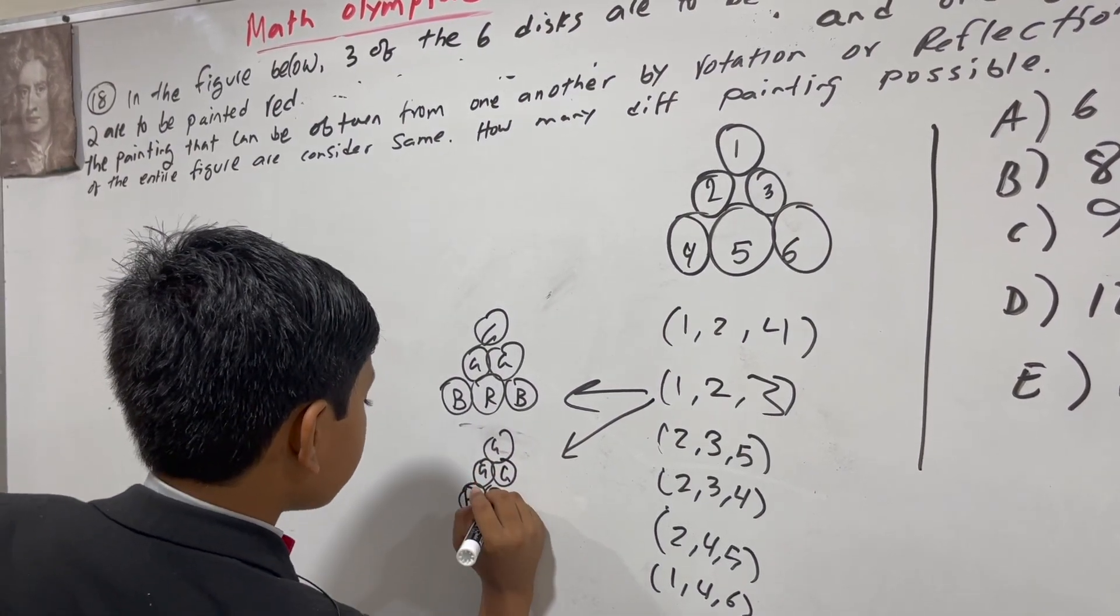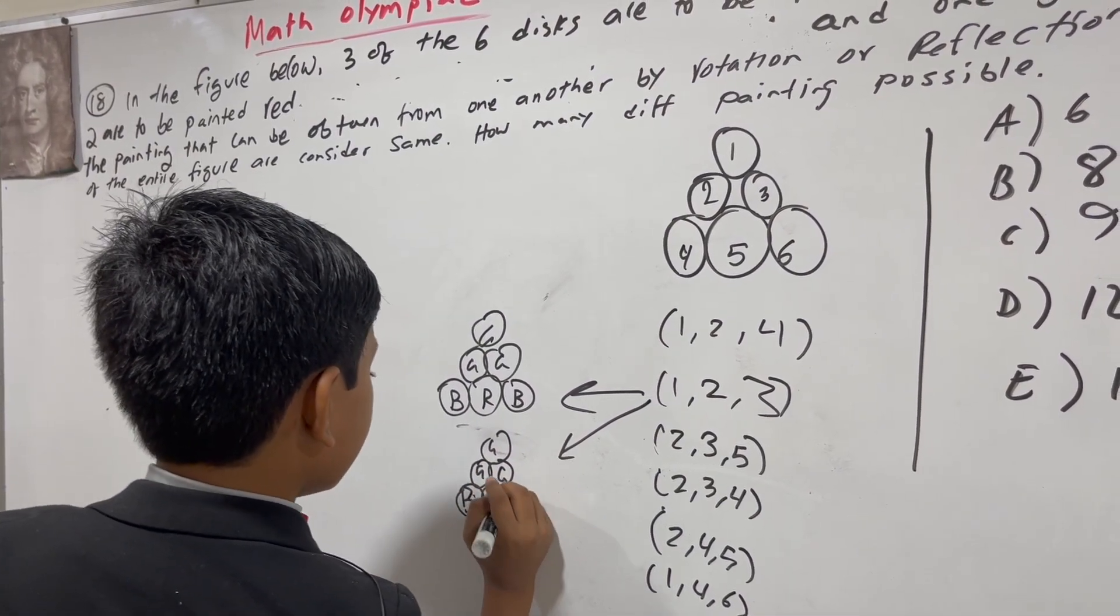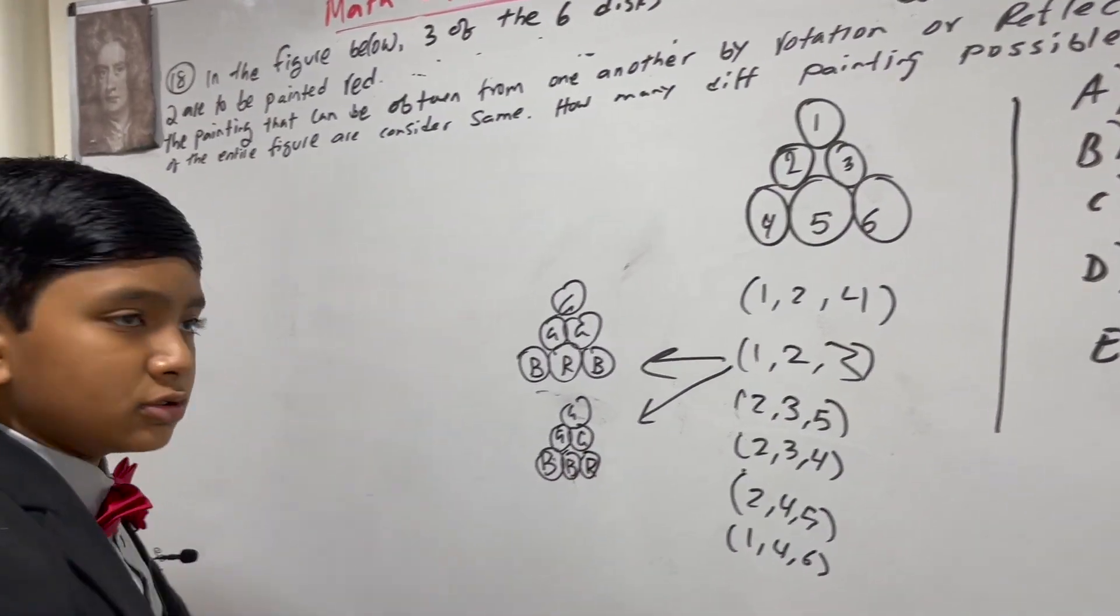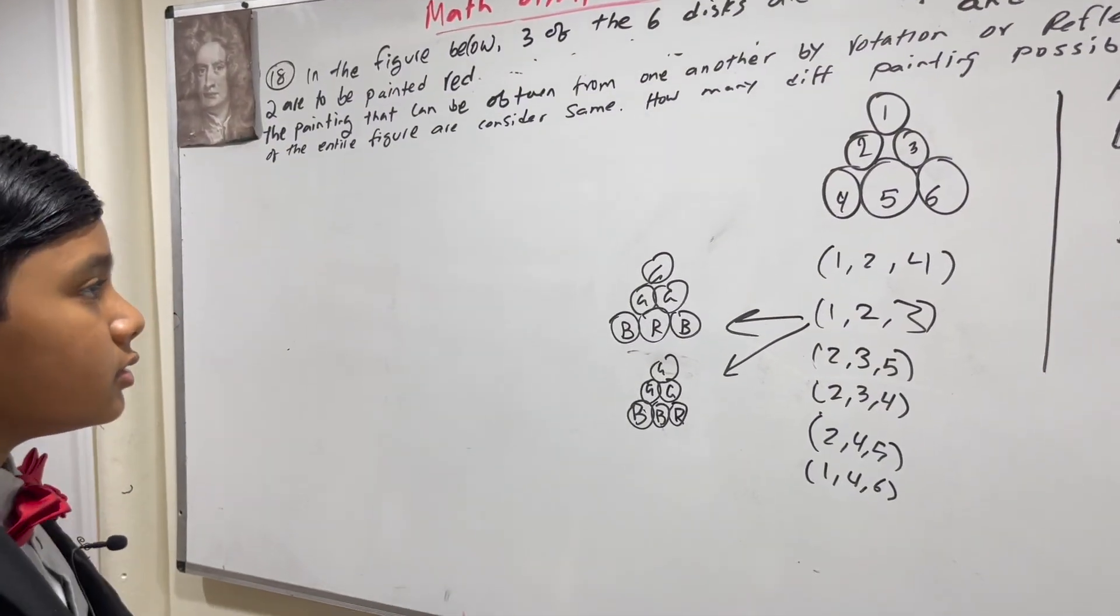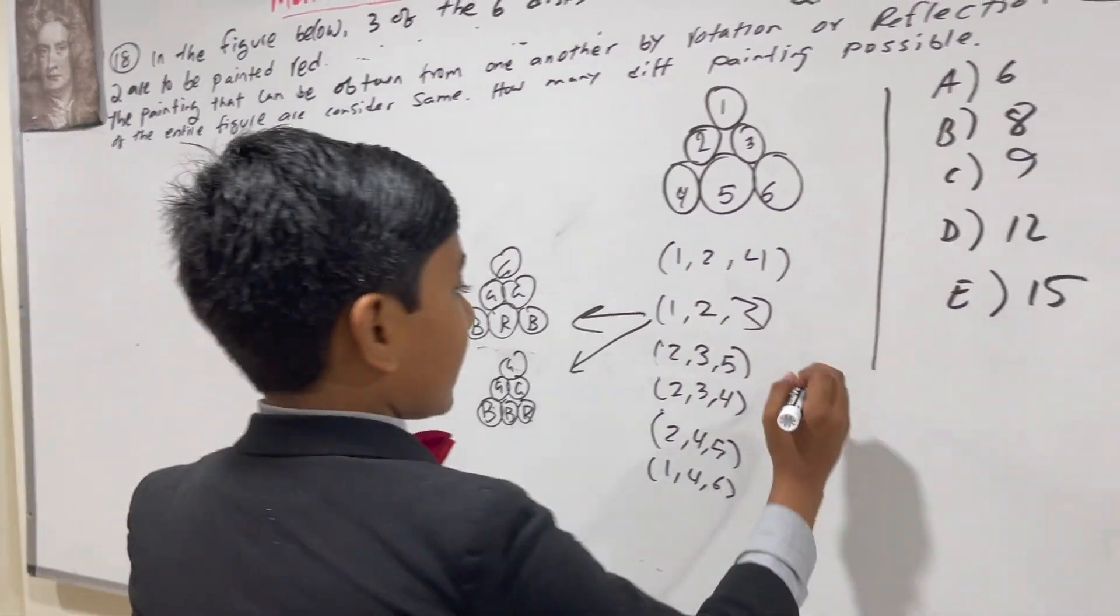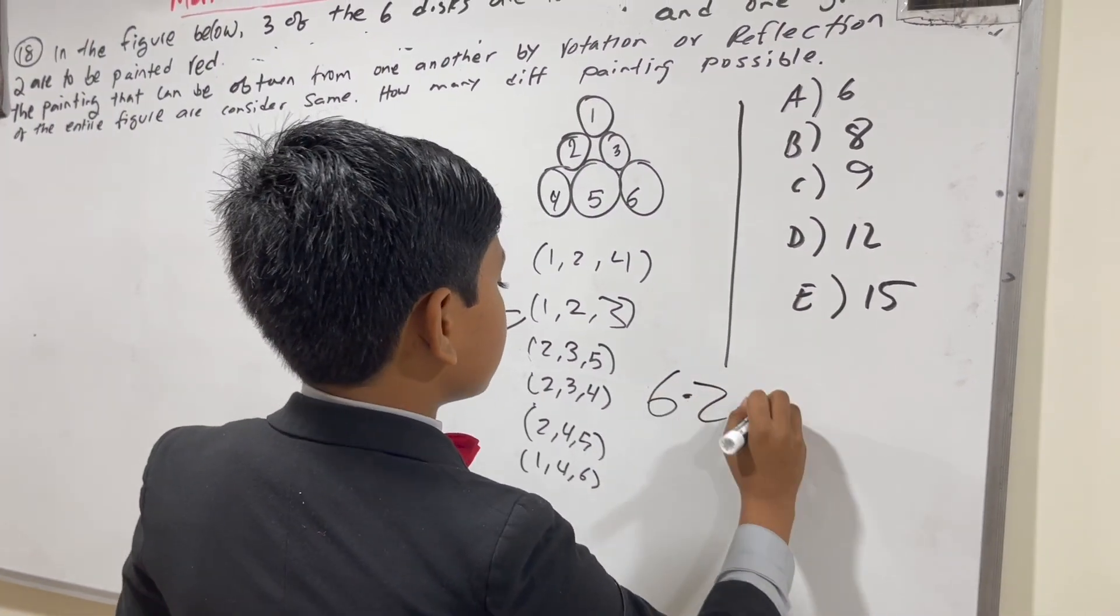And, red, blue, is rotationally symmetrical. So, we will not be considering that. So, this makes the answer 6 times 2 equals 12.